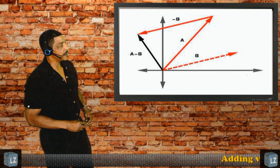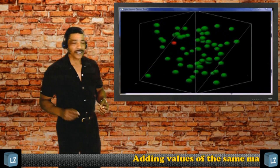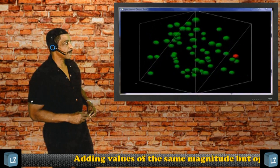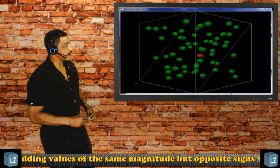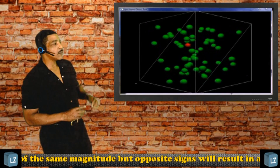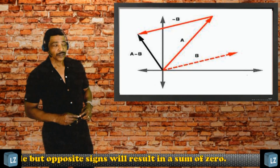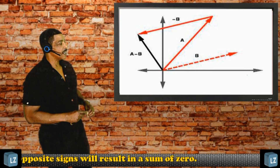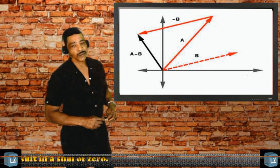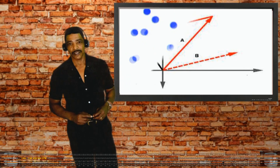Particles moving in opposite directions have velocities of opposite signs. Since gas particles have random motion, there should be equal amounts of particles moving in all possible directions. Therefore, calculating average velocity will lead to a value of zero.